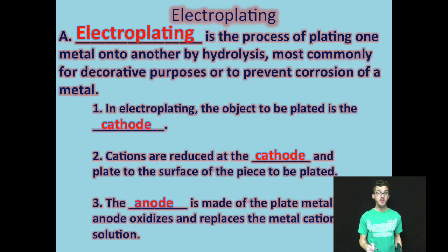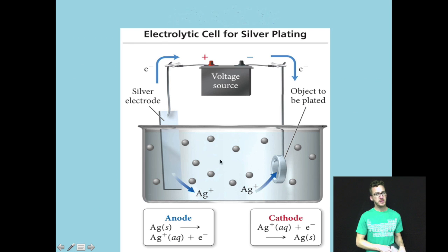If you are using a cheap metal that corrodes very easily by coating it in a less reactive metal, you're able to avoid the often very costly effects of corrosion. Now, in electroplating, the object to be plated is the cathode. Cations are reduced there and the anode is made of the plate metal.